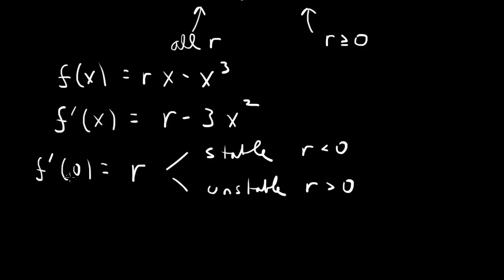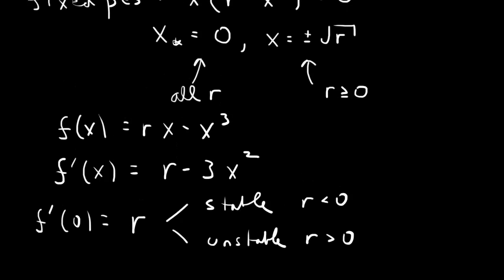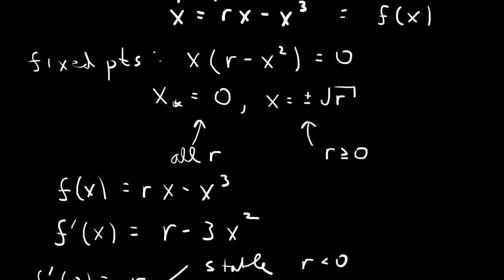So the x equals 0 fixed point is stable for negative r and then becomes unstable for positive r. Now what about the other two fixed points, x equals plus or minus square root of r?